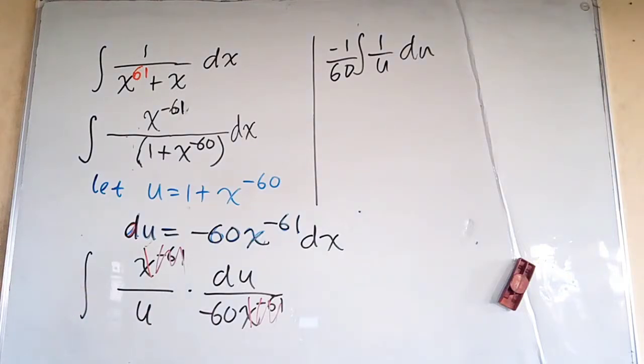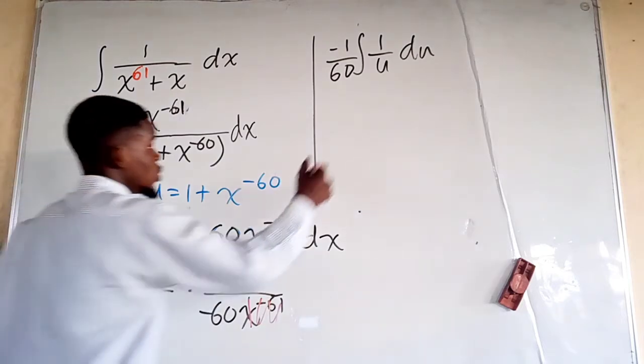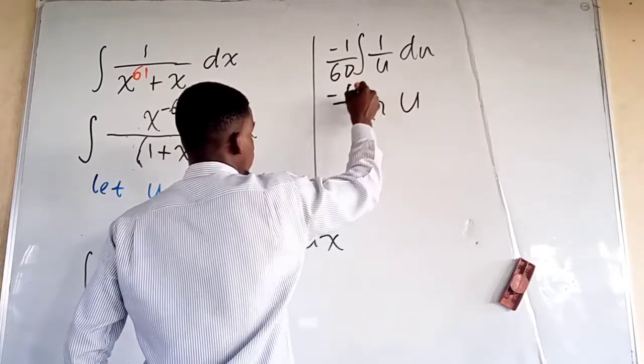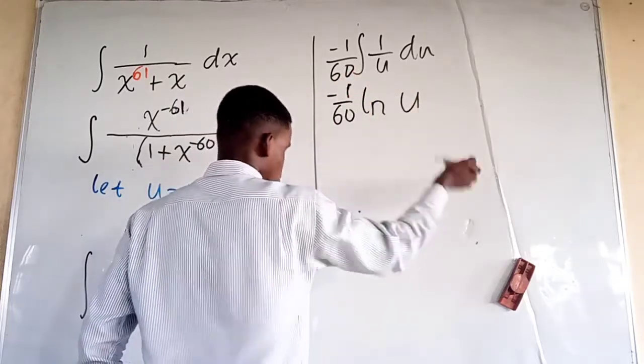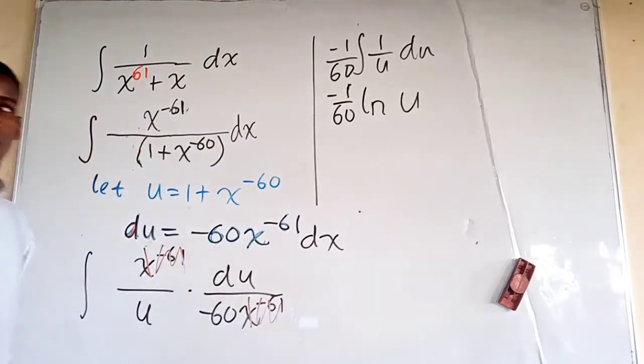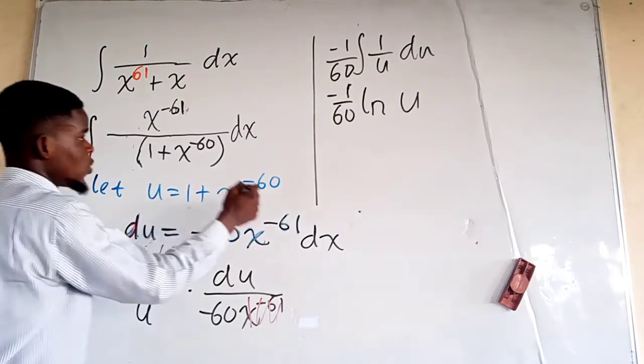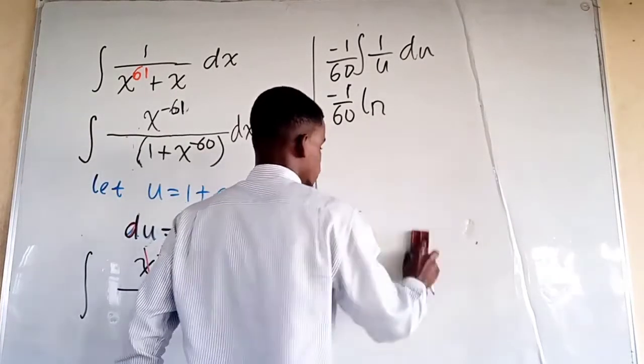By integrating 1 over u we just have the natural logarithm of u. Put down this is negative 1 over 60 natural logarithm of u. But u is the same thing as 1 plus x to power negative 60.